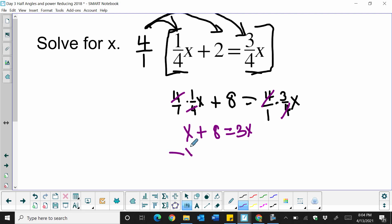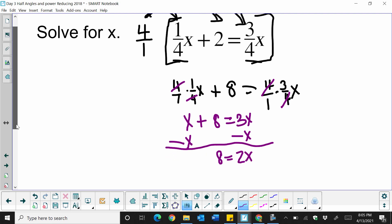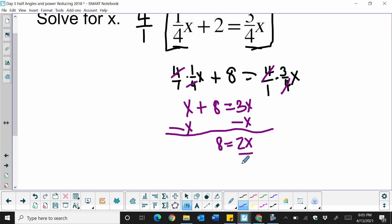So we're going to subtract 1x from both sides and bring it down, and that leaves me with 8 is equal to 2x. And then we're going to divide both sides by 2 to get our answer. And then it's 4 is equal to x, or x is equal to 4. So that's how you solve the first one.